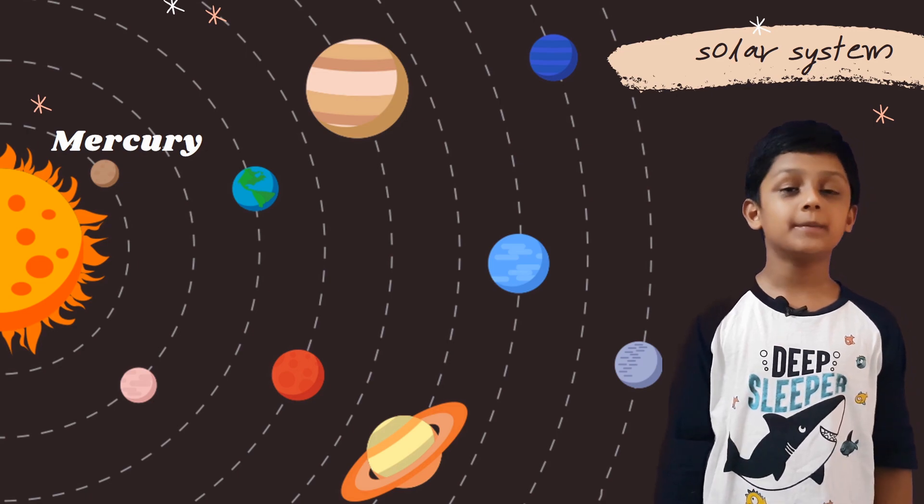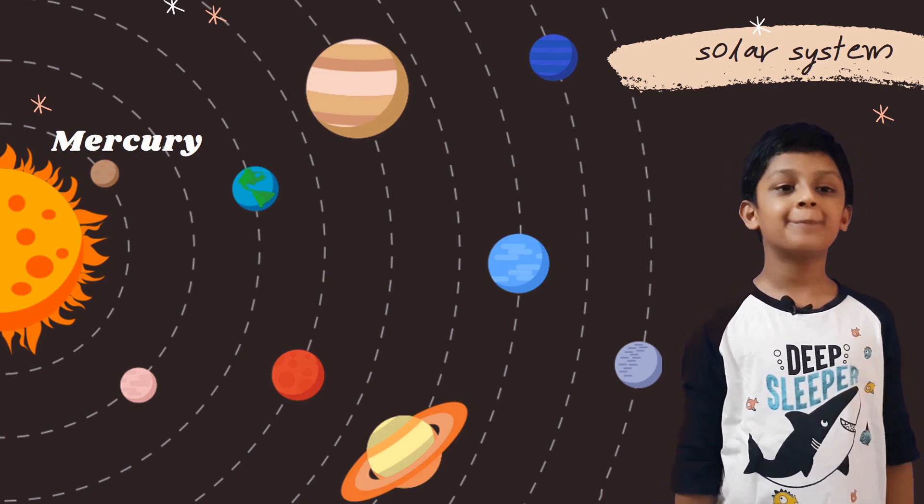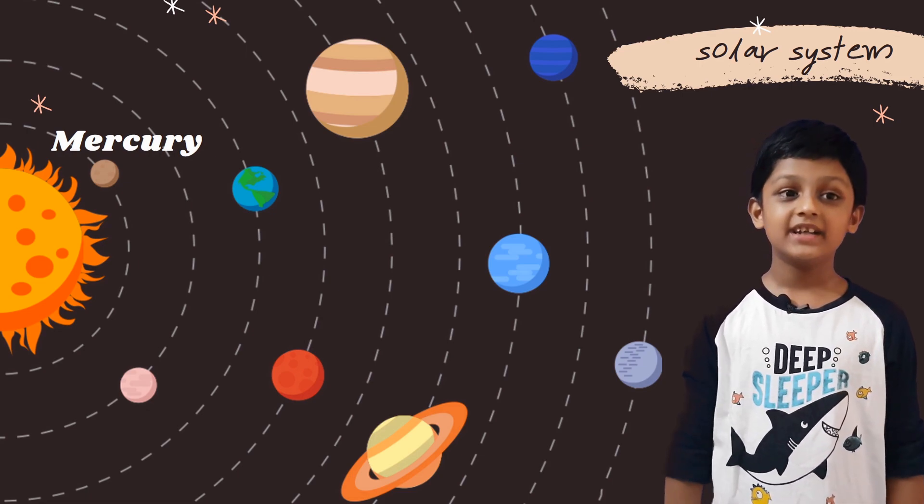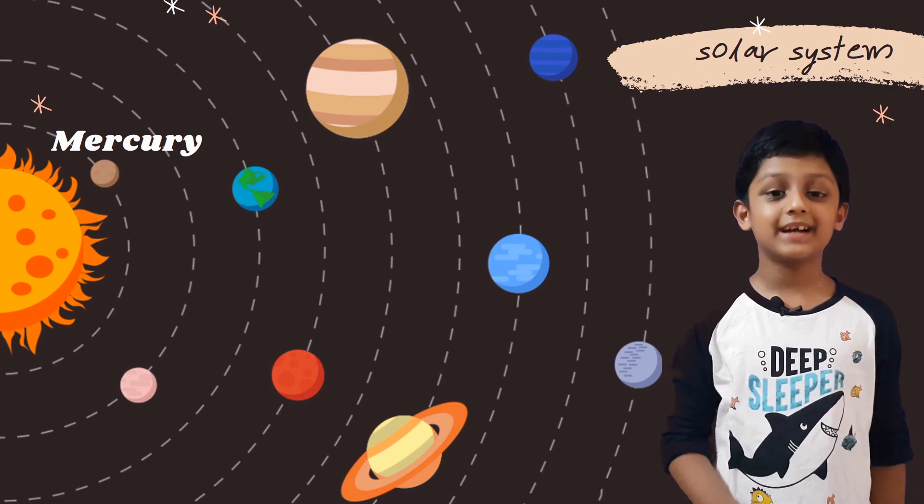Now we'll learn about the planets. Mercury, it is the first planet from the sun. It is a planet that is close to the sun and its colors are grey.